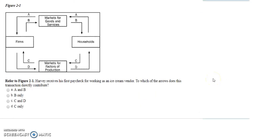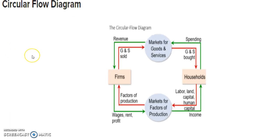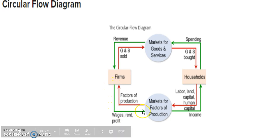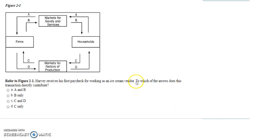Question one: Harvey receives his first paycheck for working as an ice cream vendor. To which of the arrows does this transaction directly contribute? Harvey provided labor to the firm, and in return the firm paid him wages as income. Looking at the Circular Flow Diagram, the bottom portion attributes this transaction, so the answer is C.